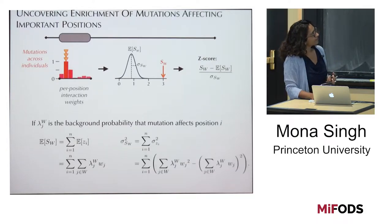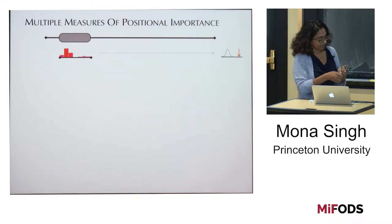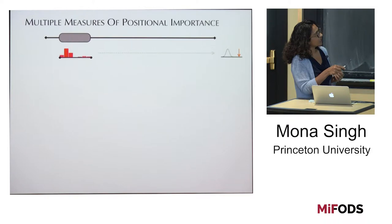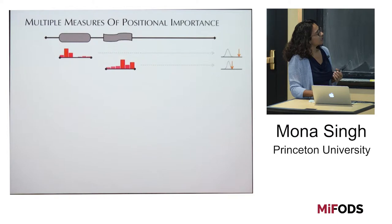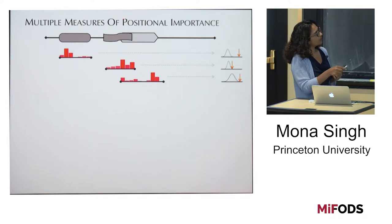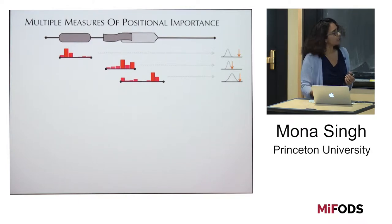It turns out we have not just one measure of positional importance. We can have multiple regions — maybe region V with its own weights, and region W with its own weights, and a third region as well. We want to know whether mutations that fall in each region tend to fall in high-weight positions. These are sometimes called interaction tracks — places that are involved in interactions. We also have other kinds of information about positional importance, reflecting how likely mutations would be to disrupt network functioning.